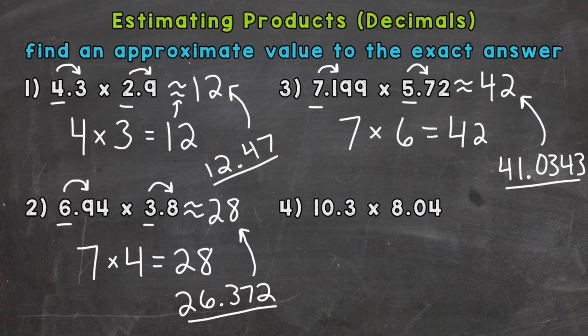And lastly, number 4, 10.3 times 8.04. So nearest whole number, let's look next door. 10.3 is closer to 10 than it is to 11.